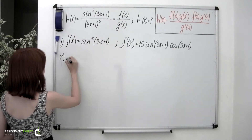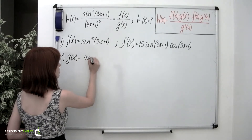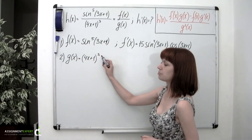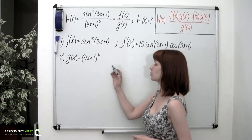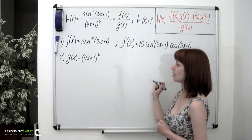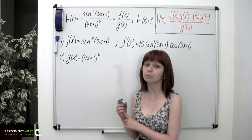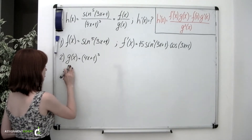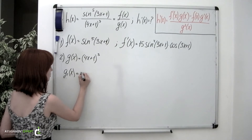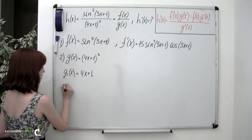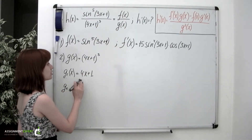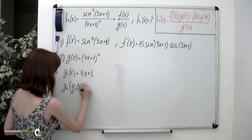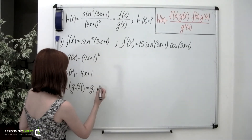Now let's consider the g of x function, which is equal to 4x plus 1 to the third. Now g of x is a composition of two functions, a polynomial and a power. To use the chain rule, we figure out which is the inside and which is the outside function. We start with the polynomial, so g sub 1 of x equals 4x plus 1. Then we raise it to the third power, so g sub 2 of g sub 1 of x equals g sub 1 to the third.